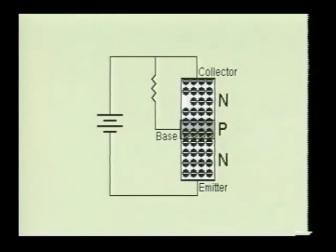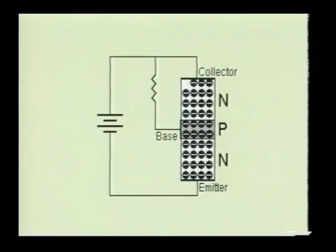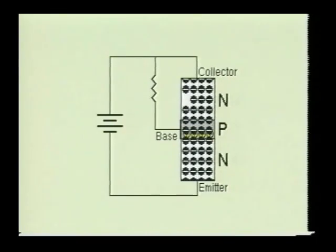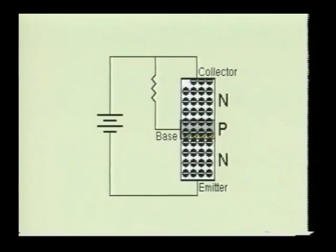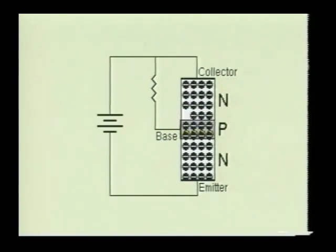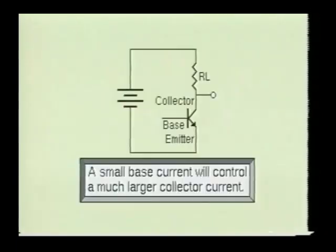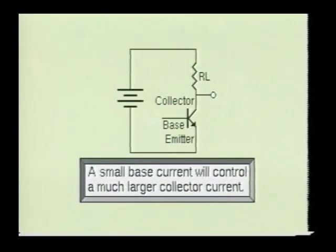As a result, about 95% of the emitter's charge carriers will pass through the base section and flow into the collector of the device. Transistors are considered current amplifying devices. This is due to the fact that a small base current can control a much larger collector current.